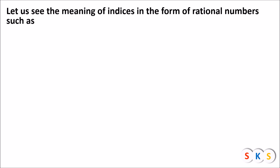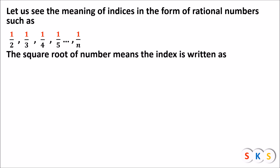Now let us see the meaning of indices in the form of rational numbers such as 1/2, 1/3, 1/4, 1/5, and so on — that is, 1 upon n. These are rational numbers used as indices. The square root of a number means the index is written as 1 upon 2.